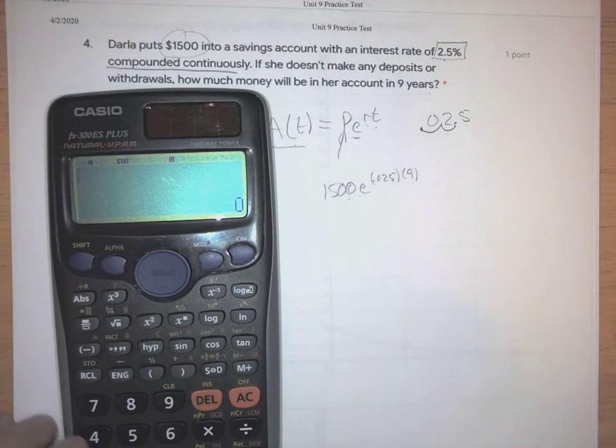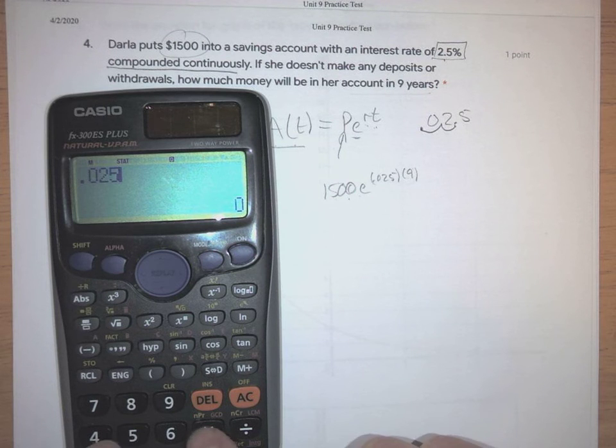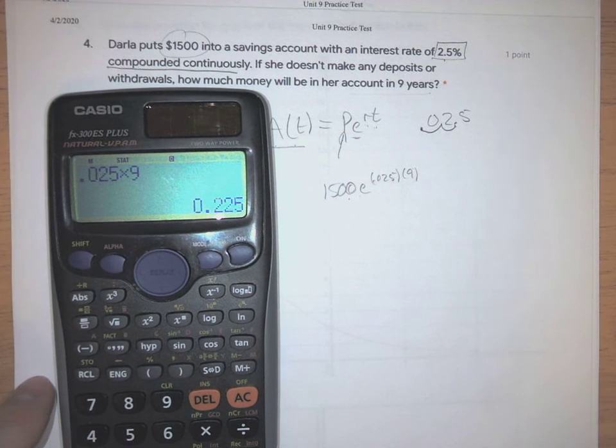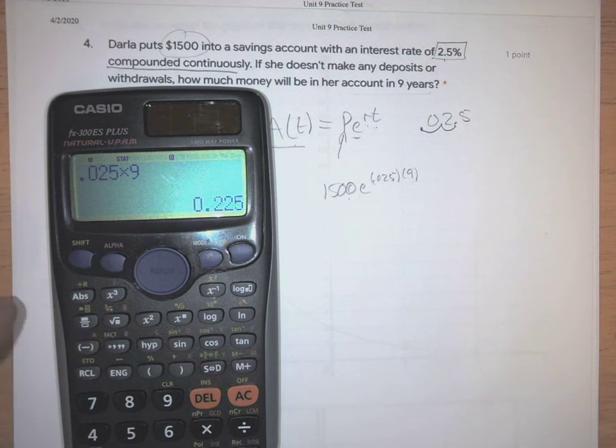Let's do it a piece at a time. So one of the things you could do is you could say, well, I just want to figure out what .025 times nine is, because that's my exponent. So now I need to do e to that power.